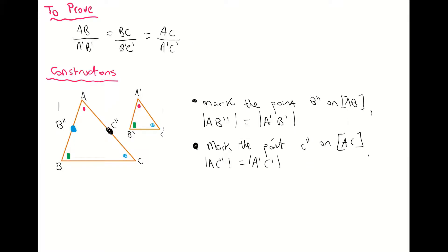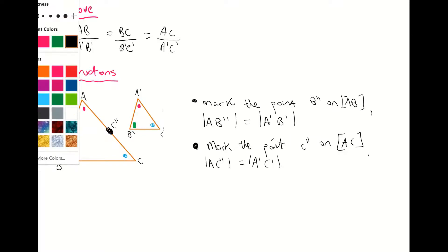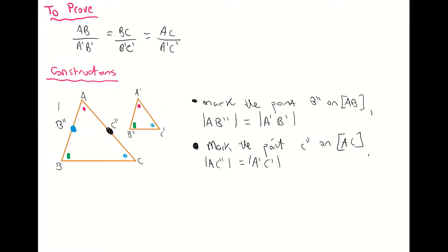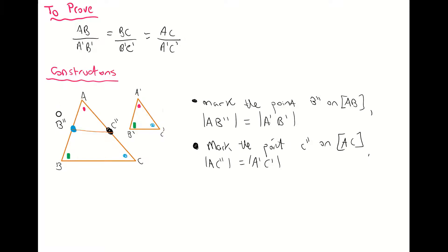That's basically everything I want to construct. I have one more construction — a straight line connecting B'' to C''. So I'm joining a line from B'' across to C''. Basically what I've done is picked up my smaller triangle and placed it into the larger triangle, so it fits in up here. So I'm going to write down that I've joined B'' to C''. That's all our constructions.